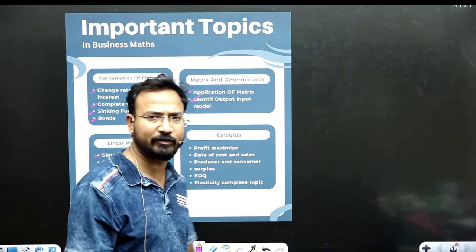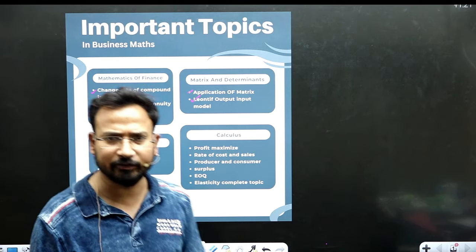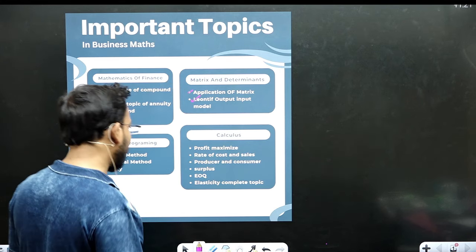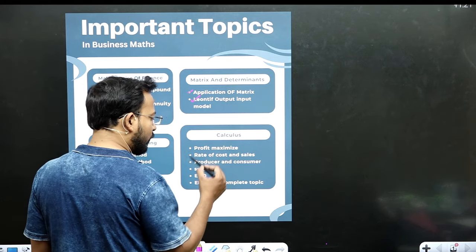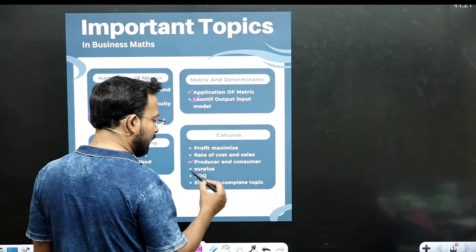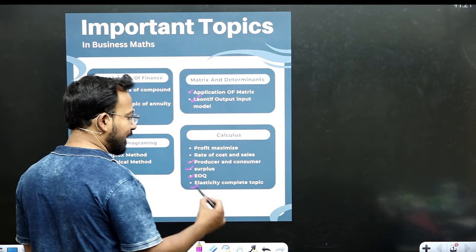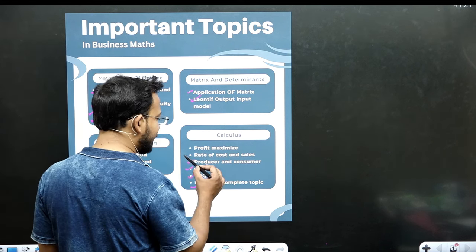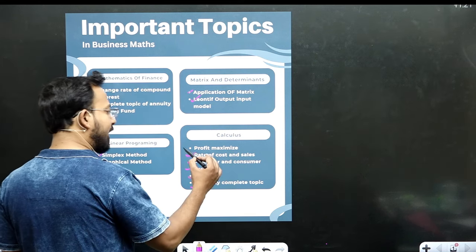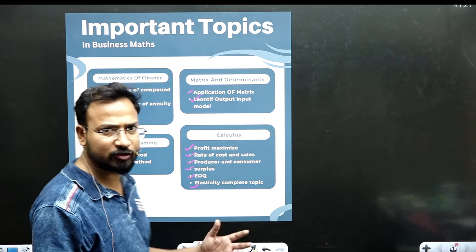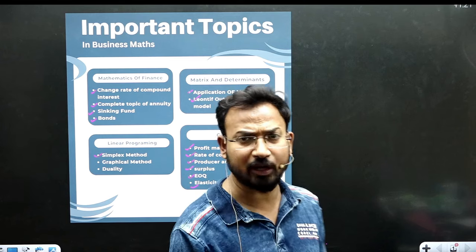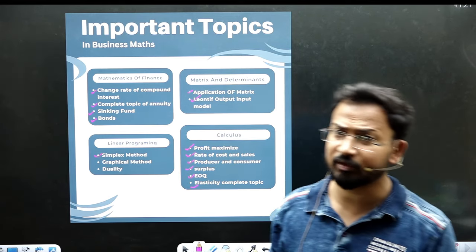But two questions you will get from calculus. It is basic calculus and advanced calculus. So you have advanced calculus and basic calculus. I have to cover both: producer and consumer equilibrium, surplus, EOQ, elasticity of complete topic, rate of cost and sales which comes in advanced calculus, and profit maximization. I would like to say, if you look at all of the lectures, it is a very important topic.